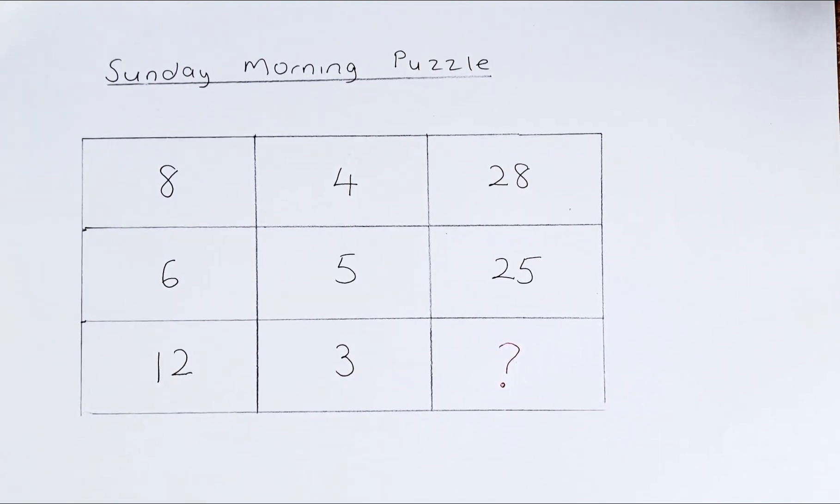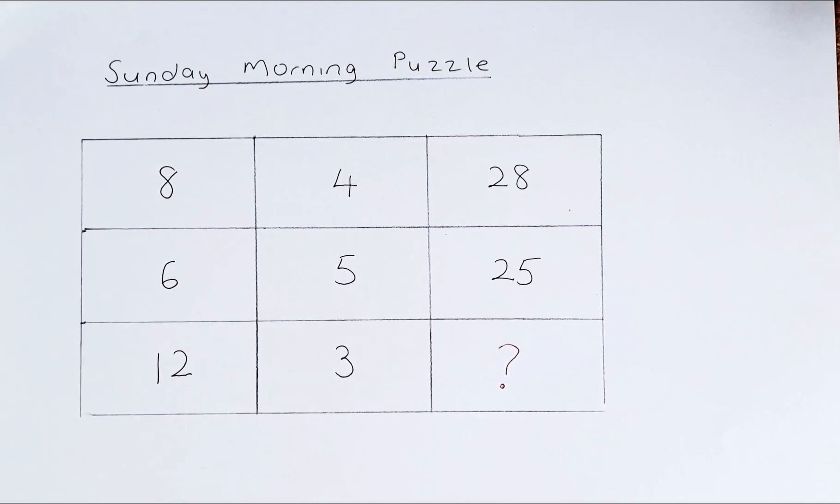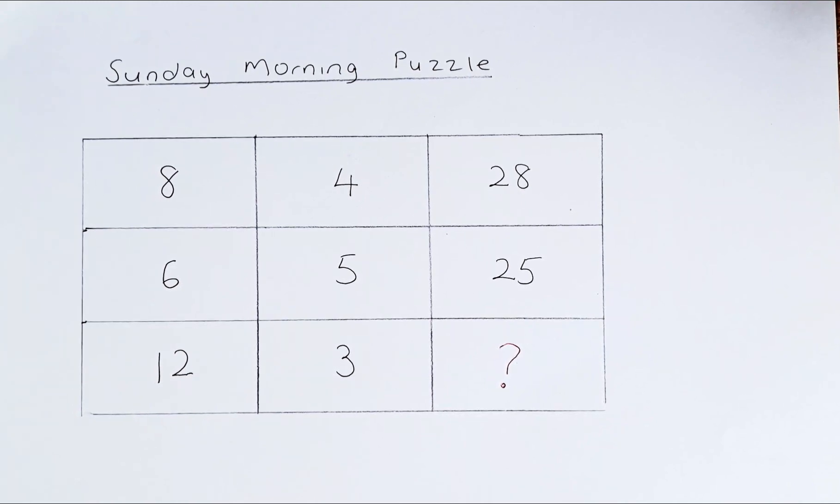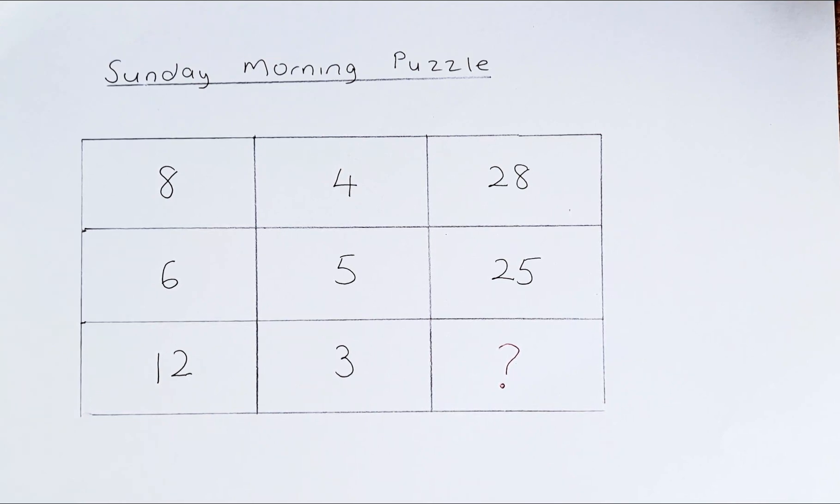To get 28 from the first row, what we do is take 8, multiply by 4, that gives you 32, and then minus 4. So 8 times 4 minus 4, which is 32 minus 4, gives you 28.